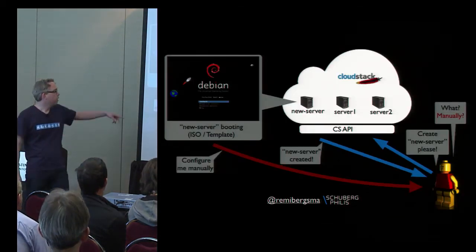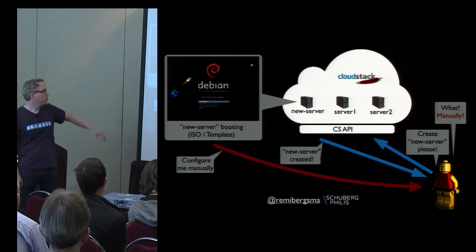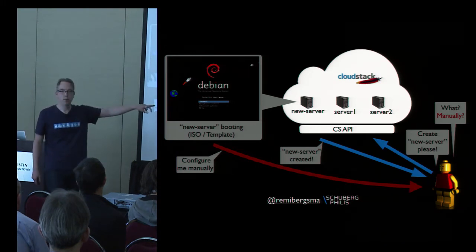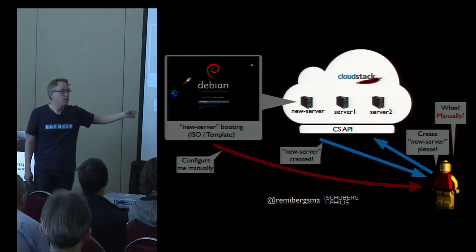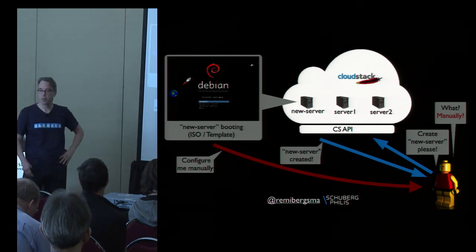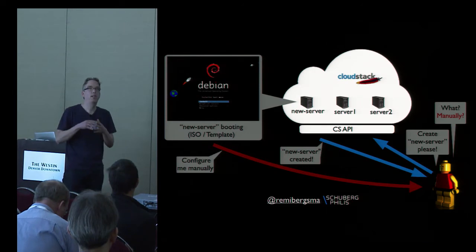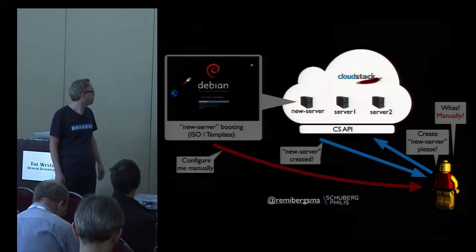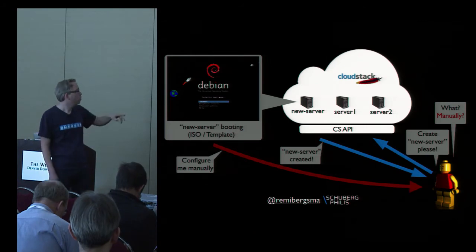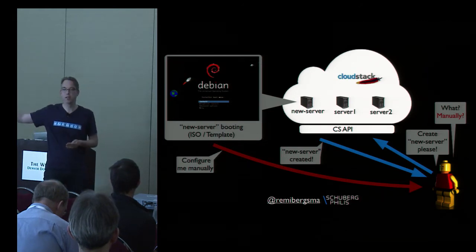The Lego man is sending an API call to the CloudStack environment. He already has two servers and now he wants a new server, so he sends an API call saying 'create me another server,' and CloudStack replies that everything is done and your server is booting. You can either boot a new server by ISO or template. The point is: when the cloud is about scalability and automation, it doesn't really make sense to configure your servers manually. He's scaling from two to three servers — probably no problem to do manually, but what if you want to scale to ten, a hundred, maybe a thousand servers?